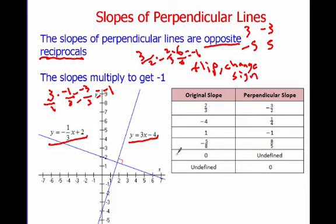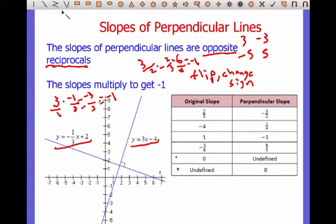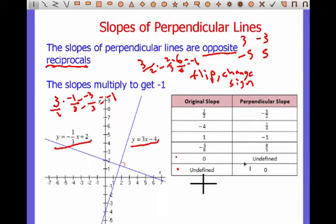The ones that are interesting are horizontal and vertical lines. If we think about it, it just makes sense that if I take a horizontal line, the type of line perpendicular to it will be a vertical line. Since all horizontal lines have a slope of 0 and all vertical lines have a slope that's undefined, if the original slope is 0 the perpendicular slope will be undefined, and if the original slope is undefined the perpendicular slope will be 0.